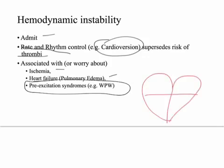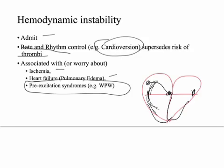Normally, the SA node conducts electricity to the AV node, which then conducts it to the rest of the heart. With a pre-excitation syndrome, there's an alternative pathway that also conducts electricity. The AV node picks and chooses how fast it allows signals through, but accessory pathways won't. So with AFib and an accessory pathway, you can literally increase the heart rate up to ventricular fibrillation.